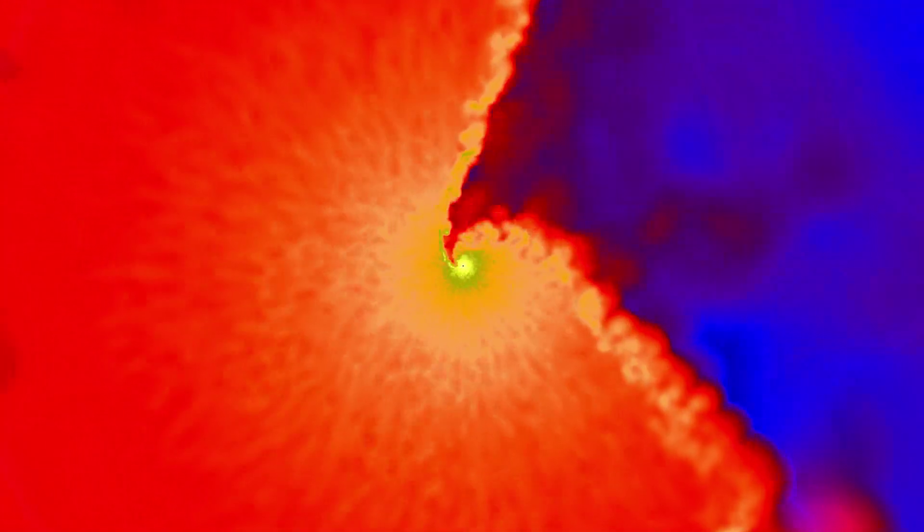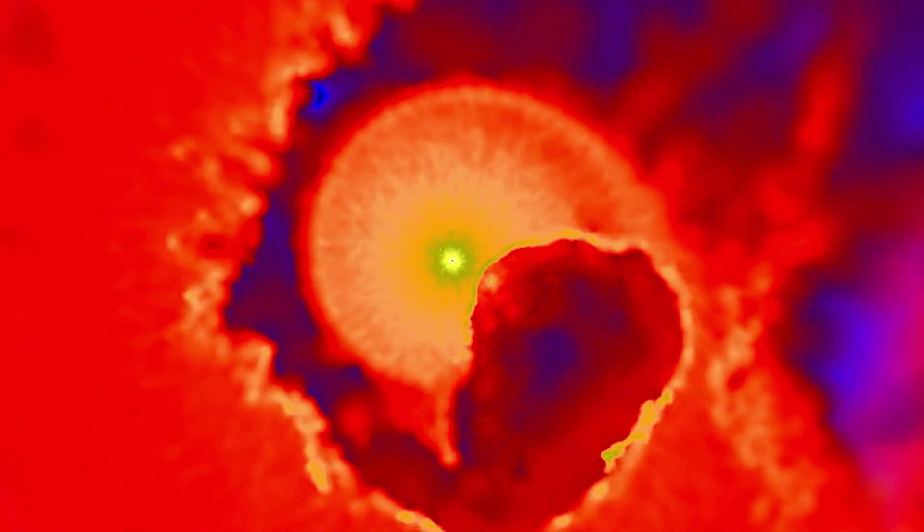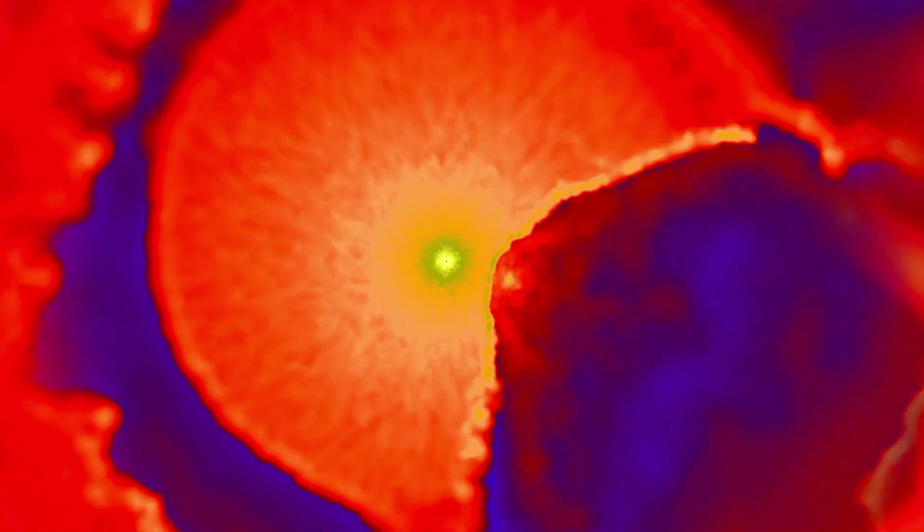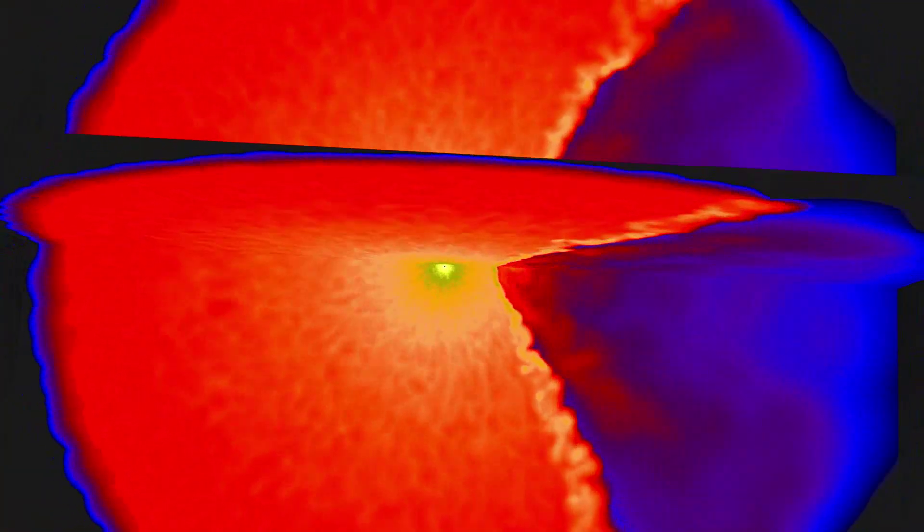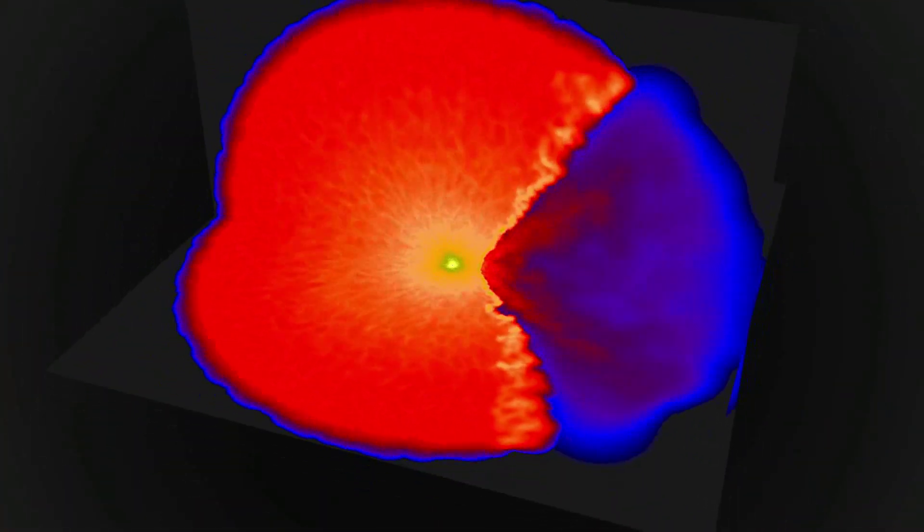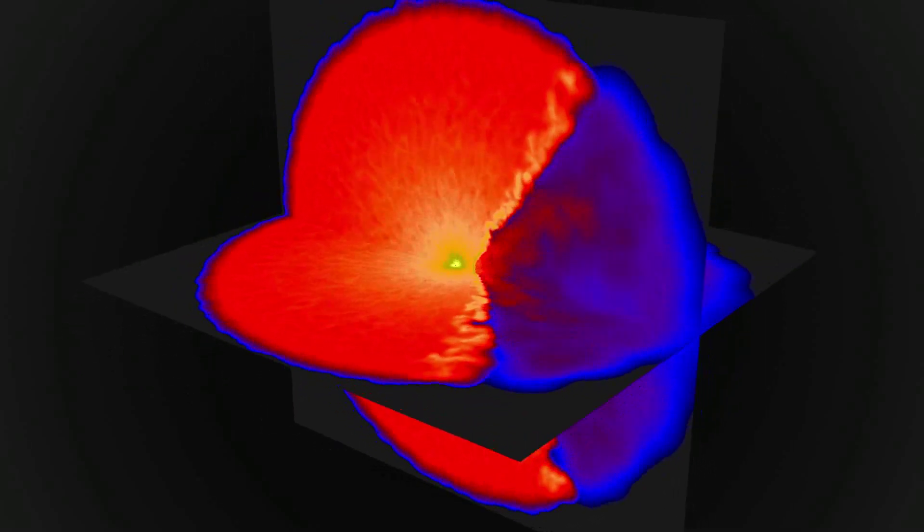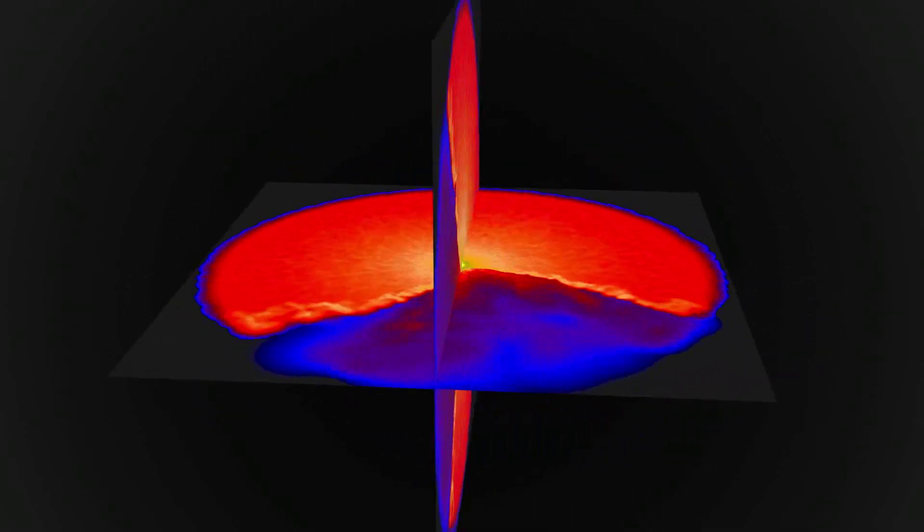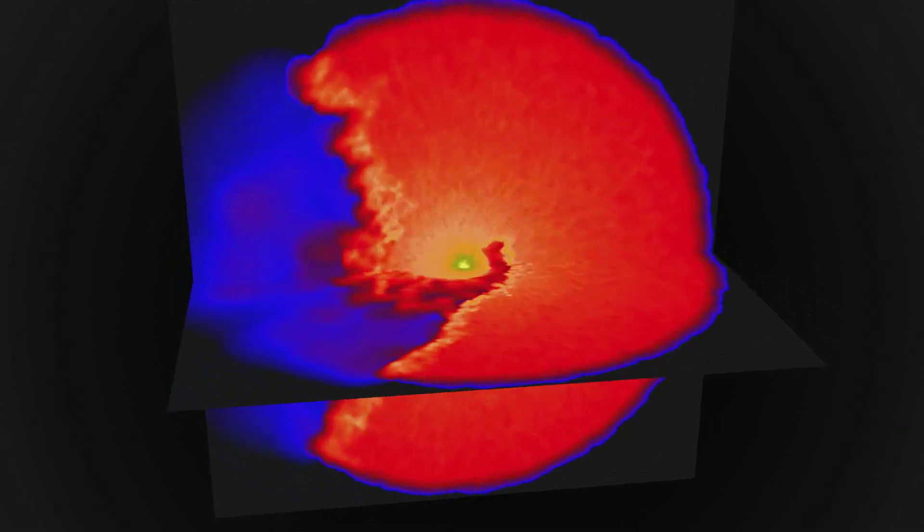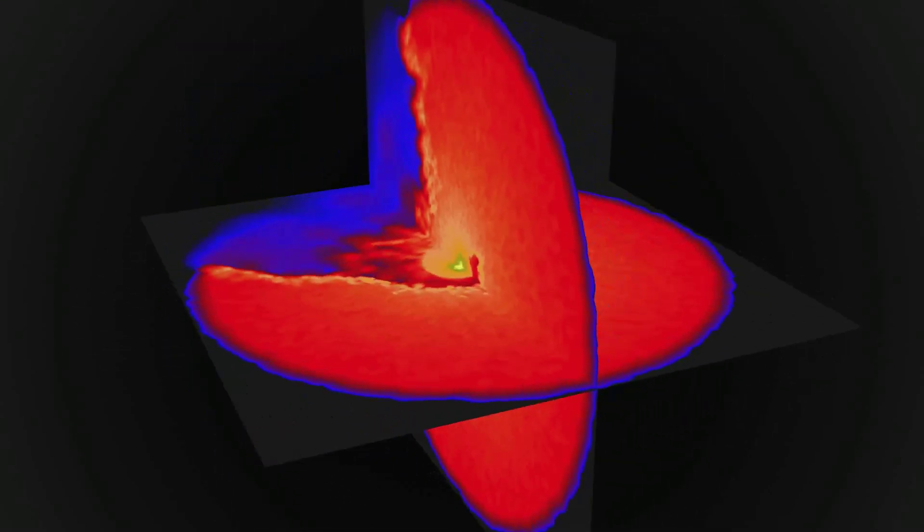But near periastron, the secondary whips around the larger star, carving a tunnel through the primary's dense wind. The secondary star's rapid motion changes the collision zone from head to tail. The smaller star's faster wind flows out along the cavity it created, and then crashes into the outward-moving wind of its companion. From our perspective on Earth, the X-rays fade, then recover as the stars move apart.